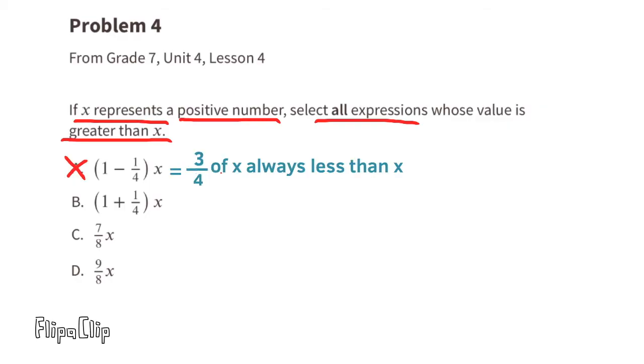Let's look at B: 1 plus 1/4 times x. That would be 1 and 1/4, or 5/4 times x, and 5/4 of x is greater than x. So I would select B.